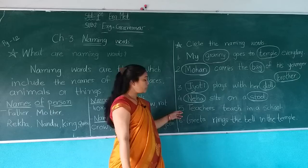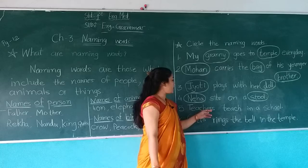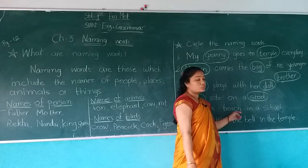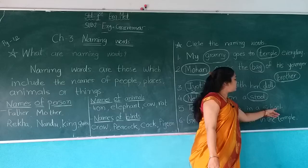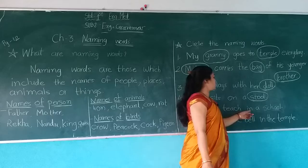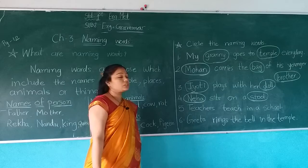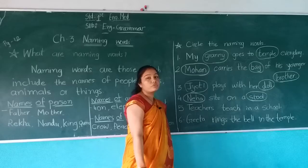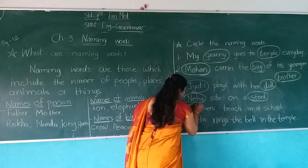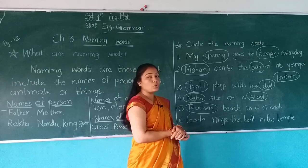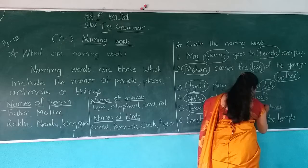Number 5: Teachers teach in a school. Which naming words are used here? Teachers is a name of person, so we do a circle on teachers. Then another name — school — school is a name of a place. It shows a place.